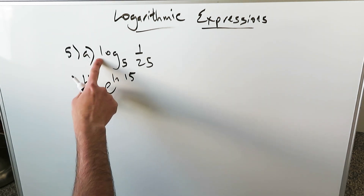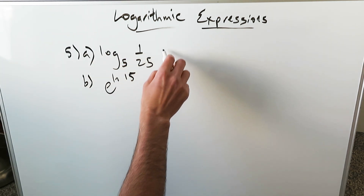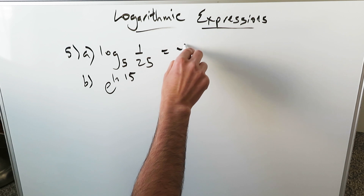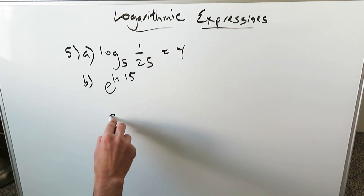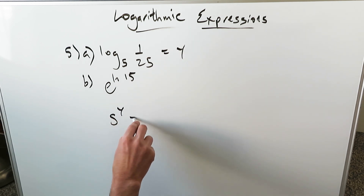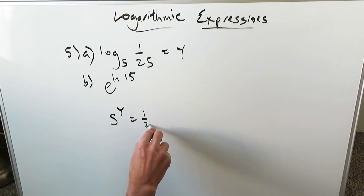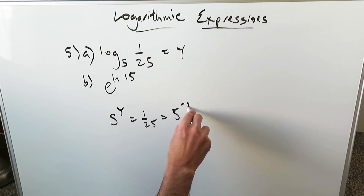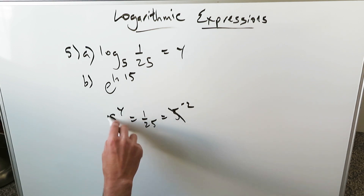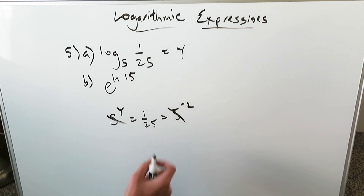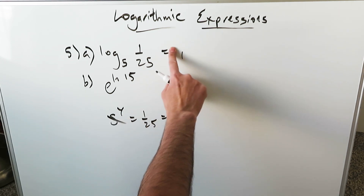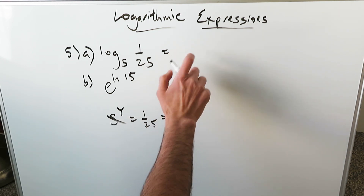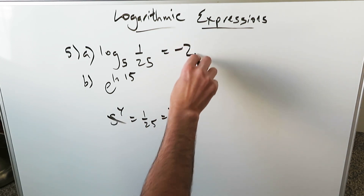Question 5A: log base 5 of 1/25 equals Y. 5 to the power of Y is equal to 1 over 25, which equals 5 to the power of minus 2. These cancel out — Y equals minus 2, and that is your answer.